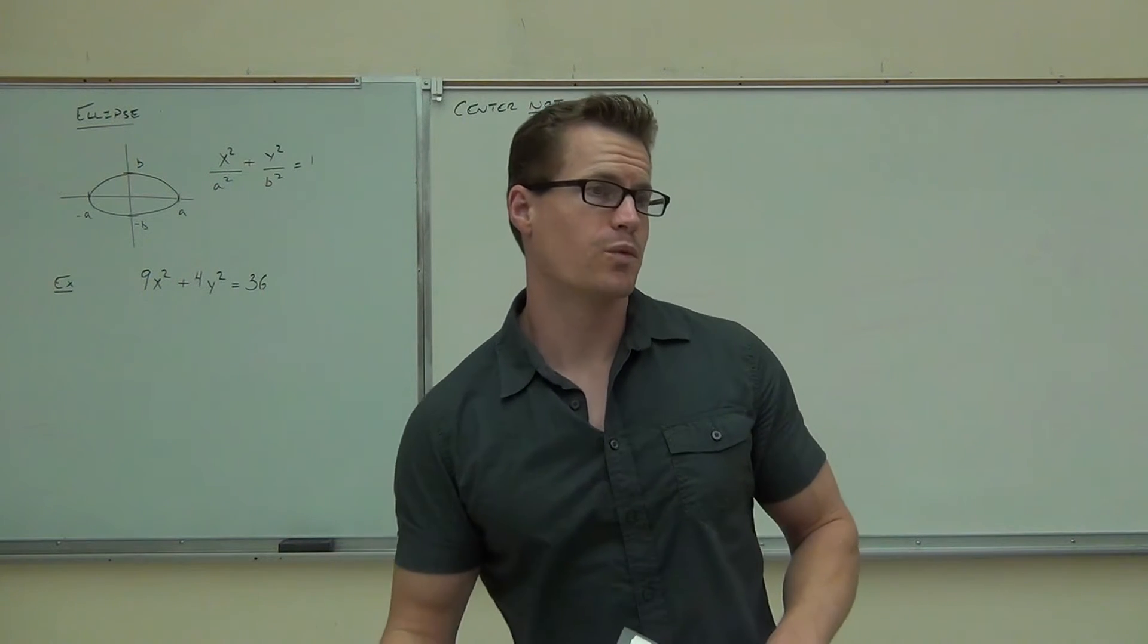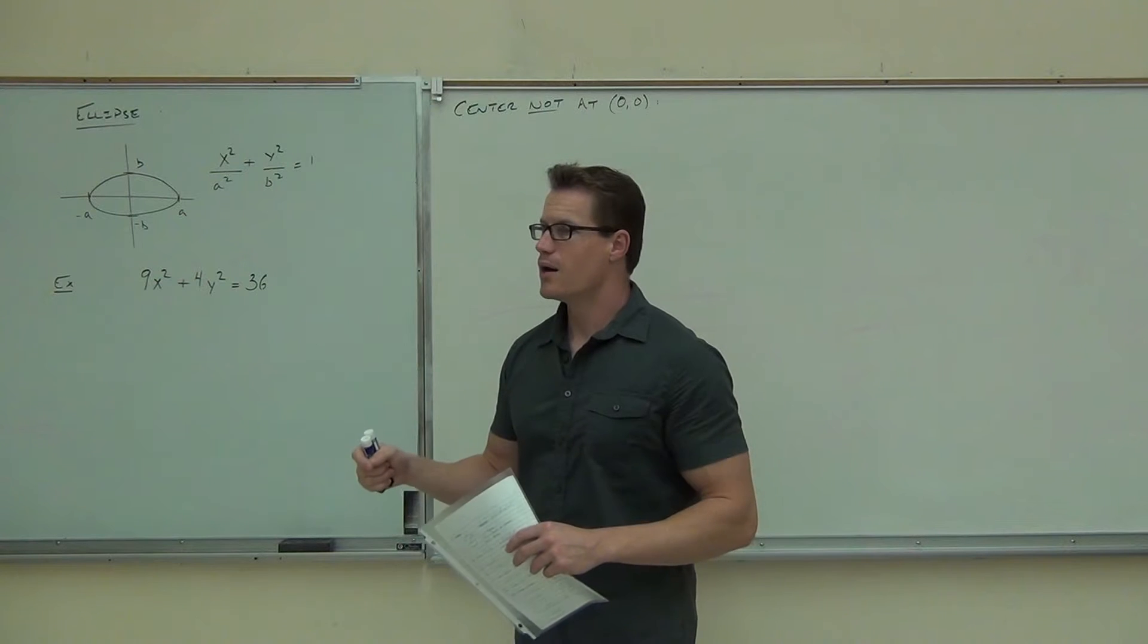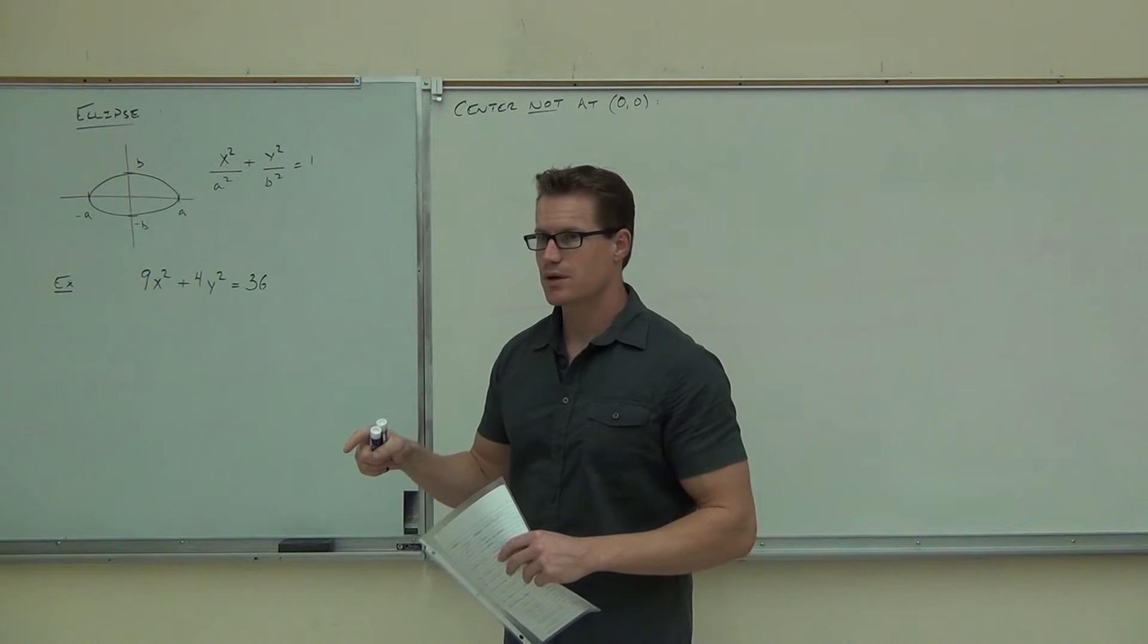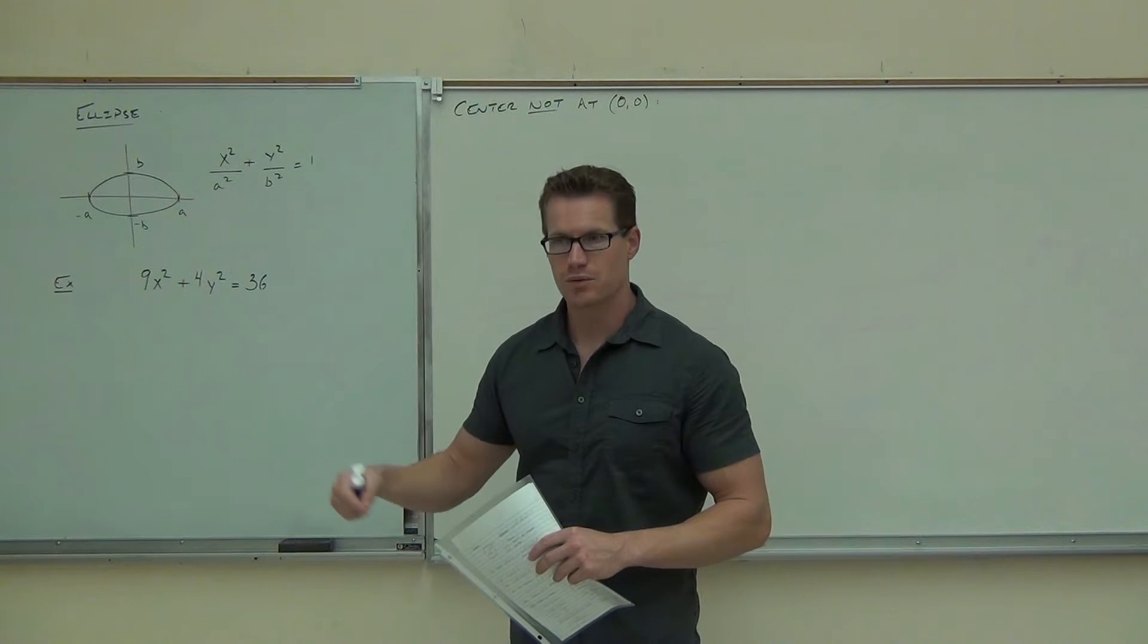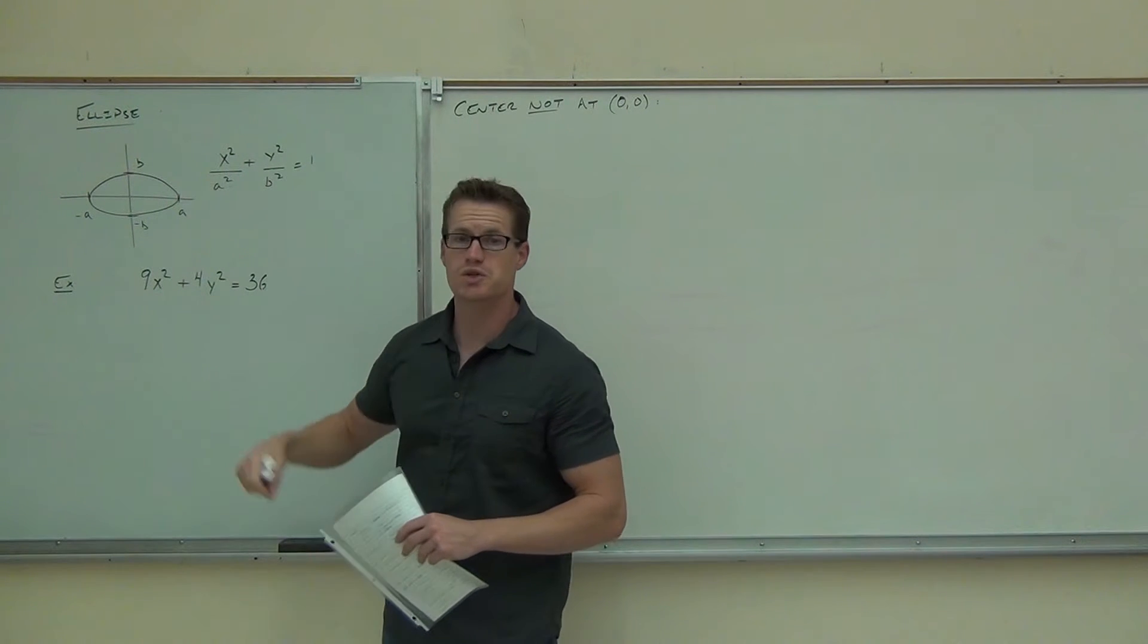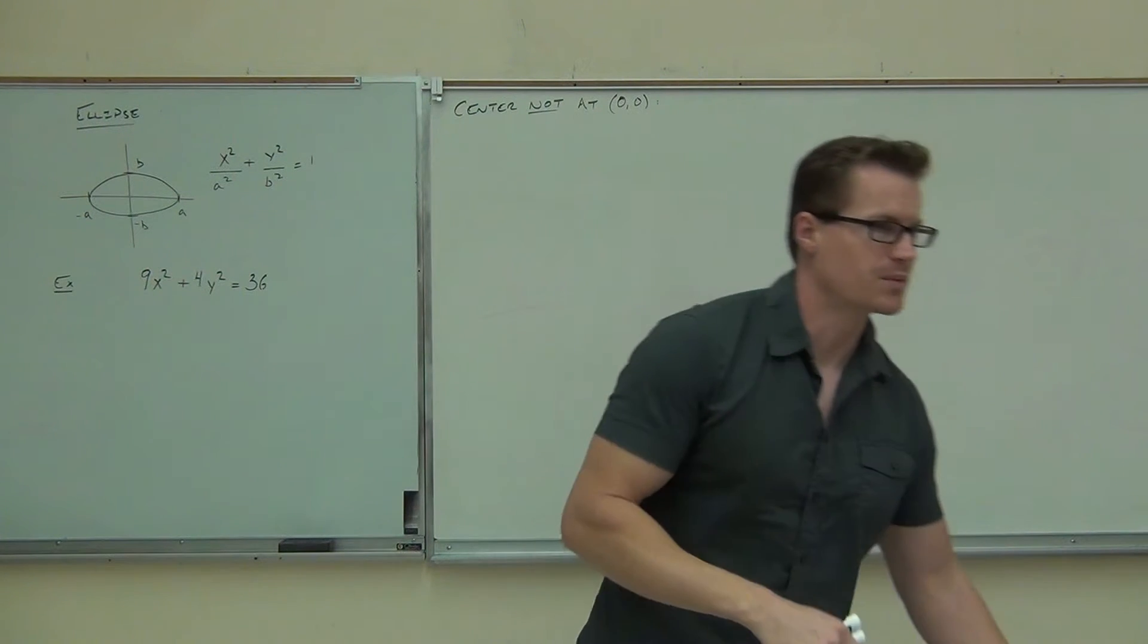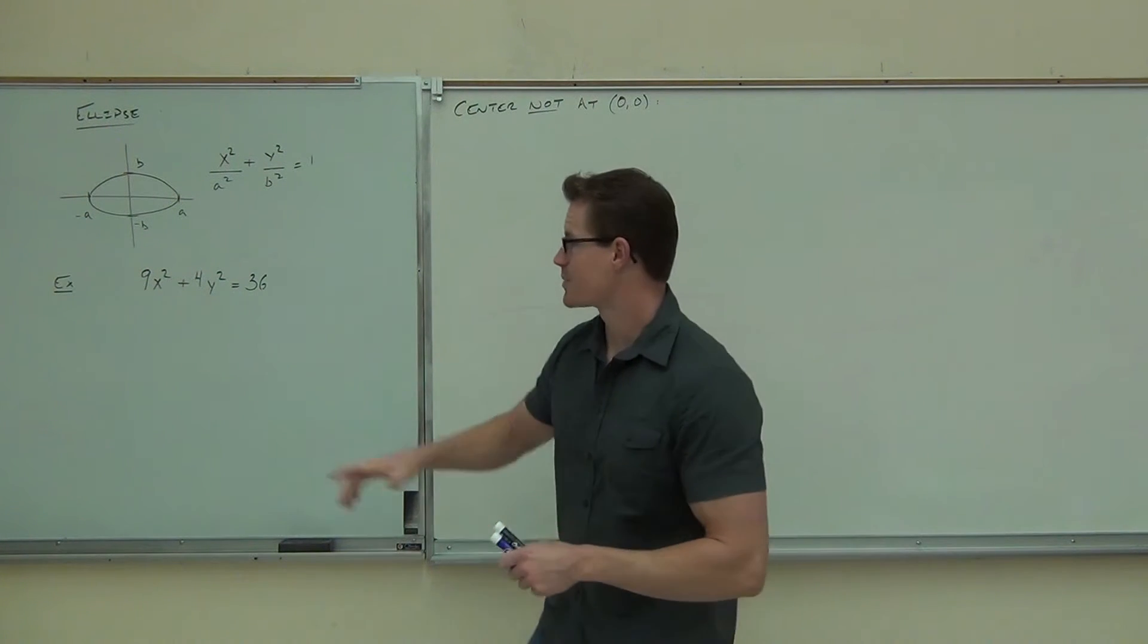First thing, you need to be able to determine what type of figure it is just by looking at the equation. Automatically we can rule out a parabola. We can rule out a parabola because that's a y squared. Y squareds are not associated with parabolas. This thing is either a circle or an ellipse.